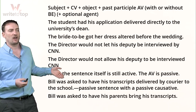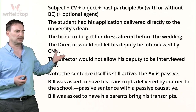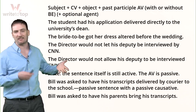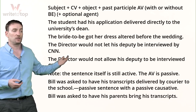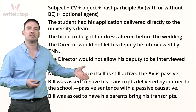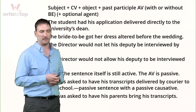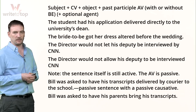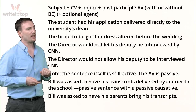You can have a passive causative verb combined with either a passive or active action verb, making the whole sentence passive. However, you cannot use had or got in a passive — 'was had' and 'was got' don't work. You also can't say 'Bill was made to have'; instead you'd say he was forced to have his transcript delivered.